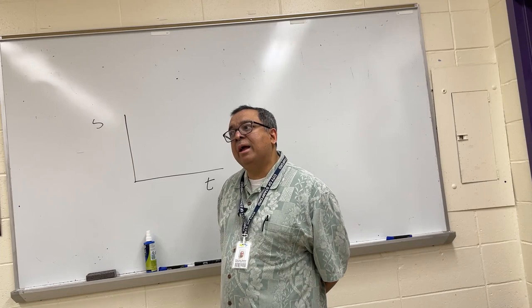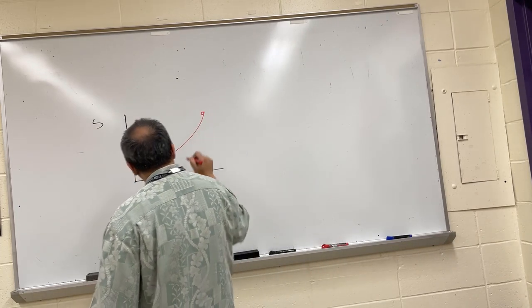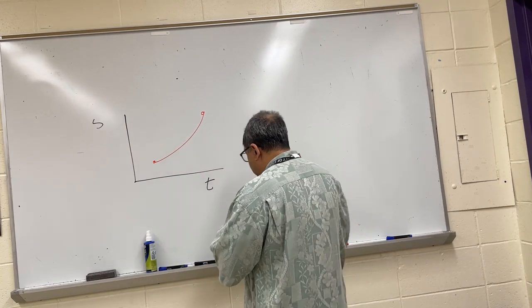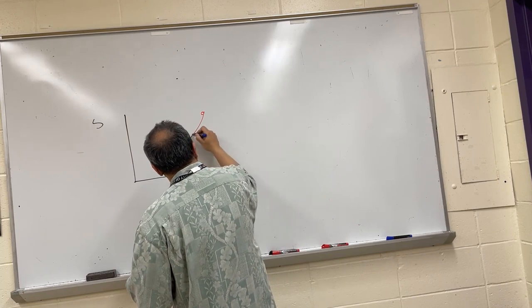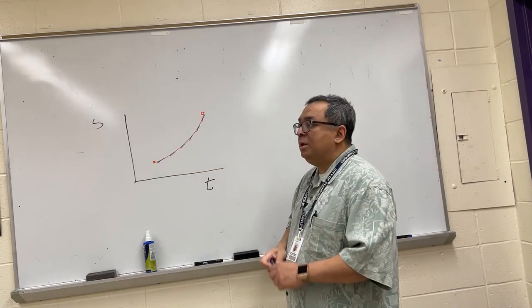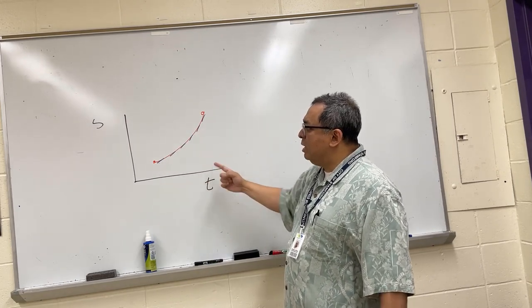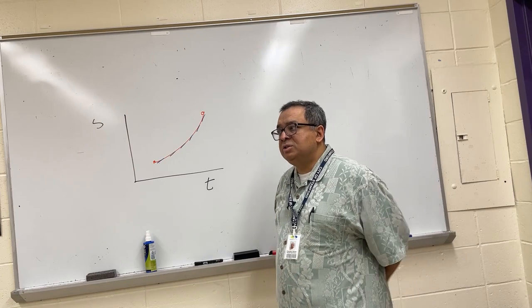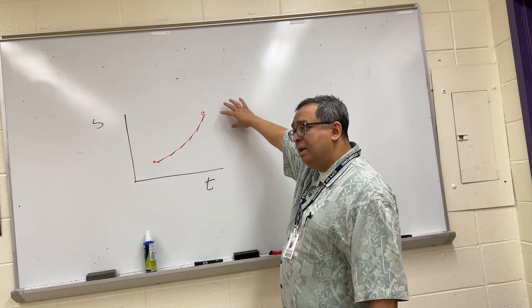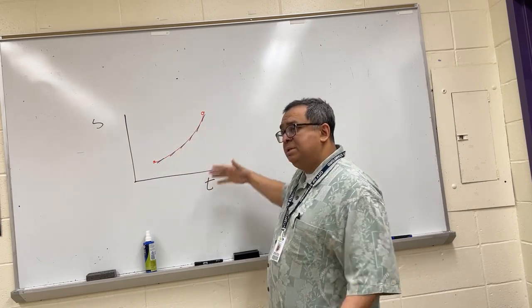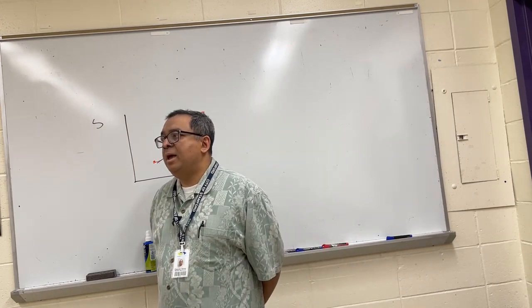Question: if the particle was accelerating, what would that graph look like? It would be some sort of curve like this. You can see that if I was to draw little slope lines here, you can see that their values are changing as time changes. So this would be an example of a particle. Is this particle increasing its speed or decreasing its speed? It's increasing, it's accelerating. If it was going to be like this, that would be decelerating.